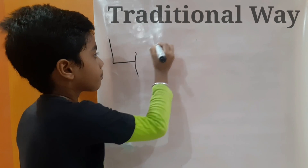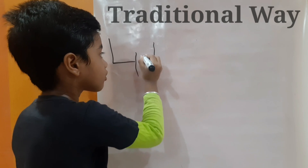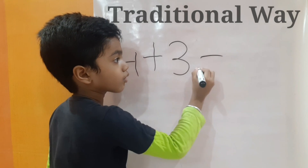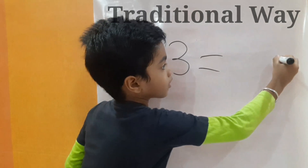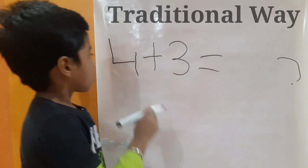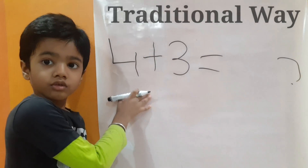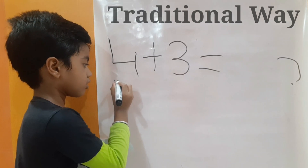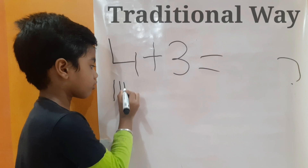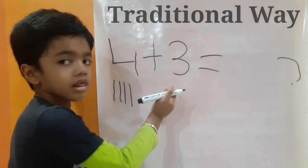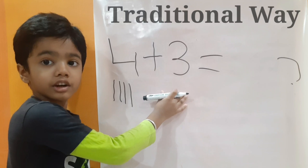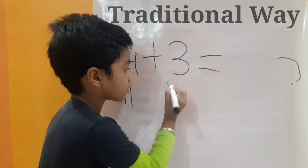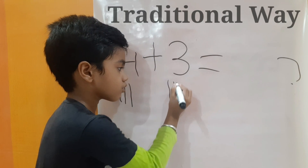4 plus 3 equals to how much? On the left side we have 4, so draw 4 lines below 4: 1, 2, 3, 4. On the right side we have 3, so draw 3 lines below 3: 1, 2, 3.